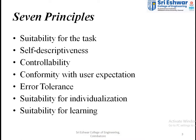The first principle is suitability for the task. If you are designing a UI for a banking software, it should be suitable for all the tasks and include all the functionality required for banking applications. The second principle is self-descriptive — the system should explain itself to the user. For example, an option called 'transaction' allows the user to identify its functionality from the name itself.